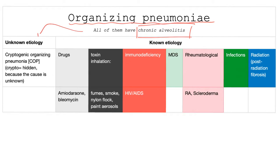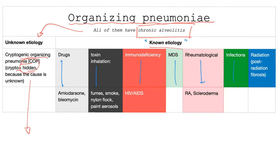Chronic alveolitis could be due to an unknown or known etiology. Unknown etiology suggests cryptogenic organizing pneumonia — we call it crypto because it's hidden, because we do not know the cause. Doctors won't say 'I don't know'; they'll say it's idiopathic, cryptogenic, primary, or essential. If it's due to a known etiology, it could be drugs, toxins, immunodeficiency, MDS, rheumatological conditions, infections, or radiation — we call it post-radiation fibrosis. Drugs include amiodarone and bleomycin, among others.